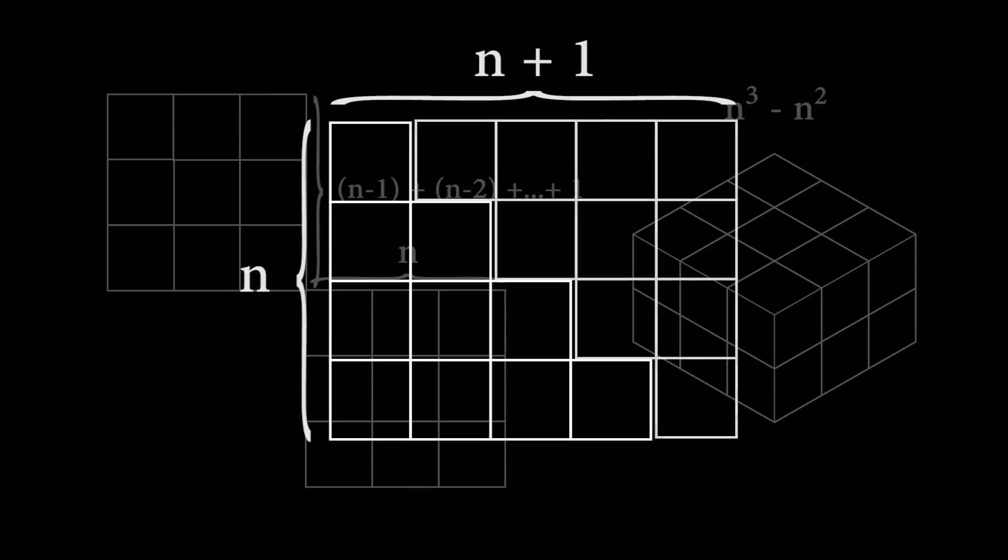Since the original triangle is half that, it must have area n times n plus 1 over 2. And just like that, we've derived the formula for the nth triangle number.